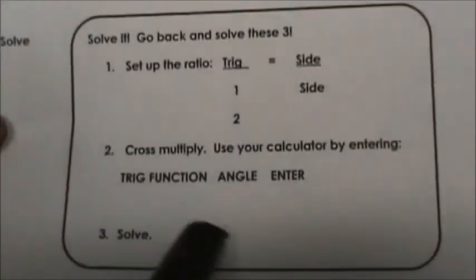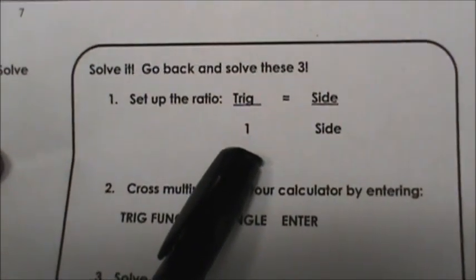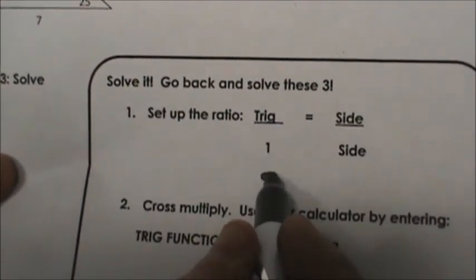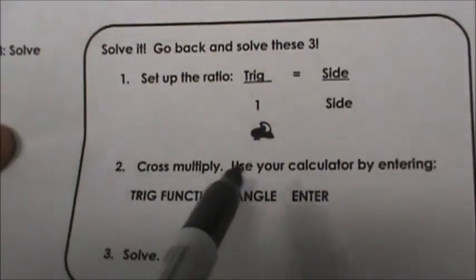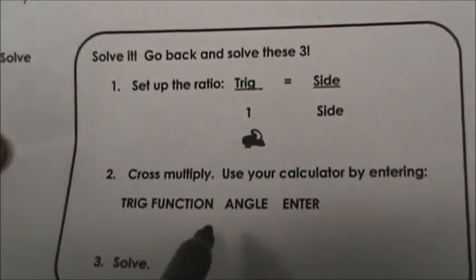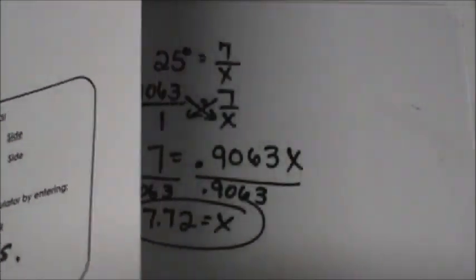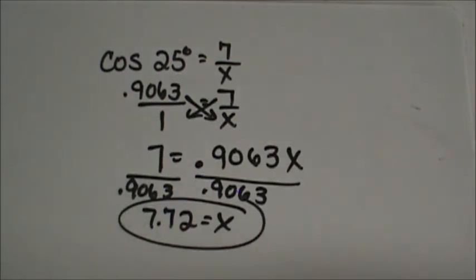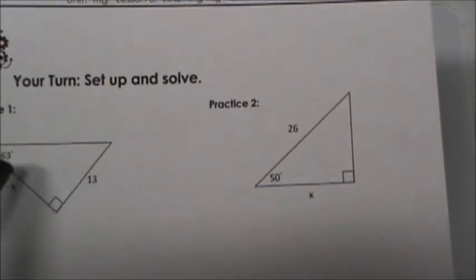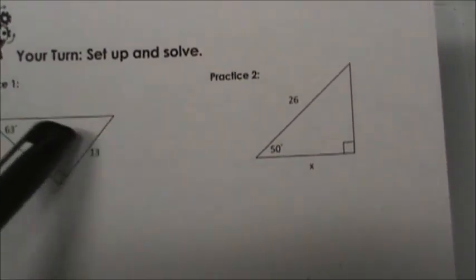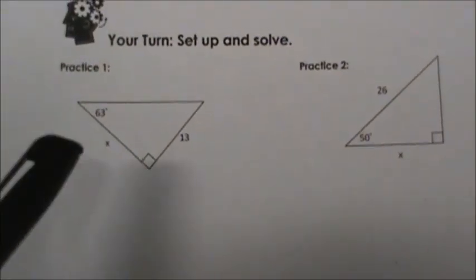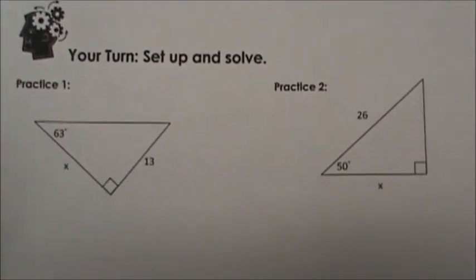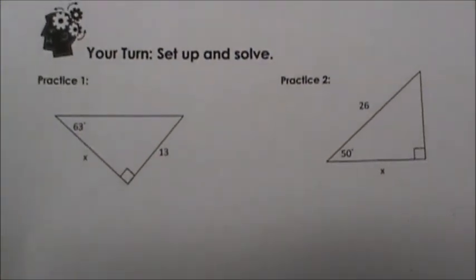So we've gone back and solved all the problems by setting this up: trig function over 1 is equal to side over side. Then you take your trig function with the angle and enter it to find the actual decimal value — remember, you want four decimal places for accuracy. Now the last thing on the notes guide today is for you to work through a couple practice problems on your own: look at your reference angle, decide which two sides you have, decide which trig function to use, set it up, and solve. Both of these use different trig functions. Good luck and check your answers in the course.